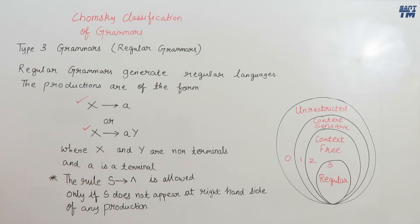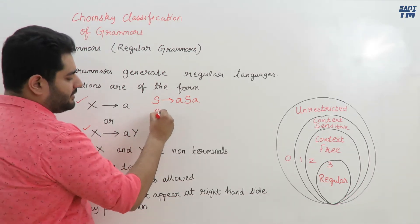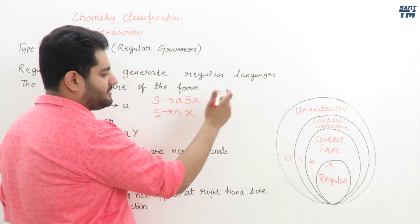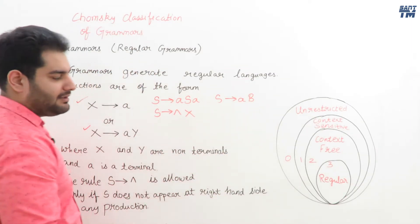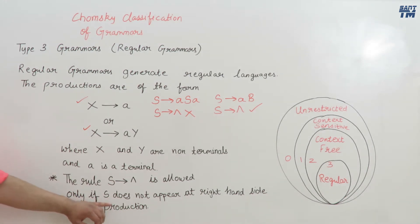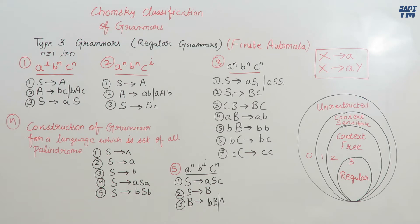One special rule: S derives null is allowed only if S does not appear on the right hand side of any production. For example, if there is a production S derives ASA, then we cannot use S derives null. But if S does not appear on the right hand side of any production, such as S derives aB, then S derives null is possible.